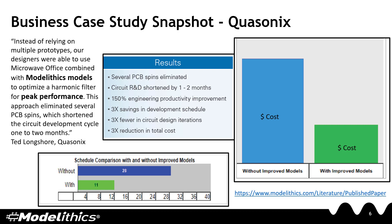In this business case study, a long-time Model Ethics customer was attempting to optimize a harmonic filter for peak performance. He compared using the Model Ethics library to develop the design versus what it would have cost him in both time and schedule to optimize the same filter. It was concluded that several PCB spins were eliminated, the circuit R&D cycle was shortened by up to one to two months, and the customer reported 150% engineering productivity improvement and three times savings in schedule, circuit design iterations, and total costs. For more information about this case study, please see the published paper section on our website.